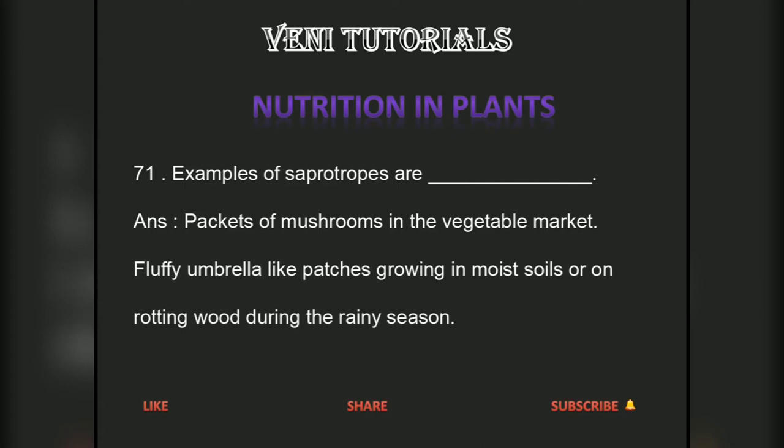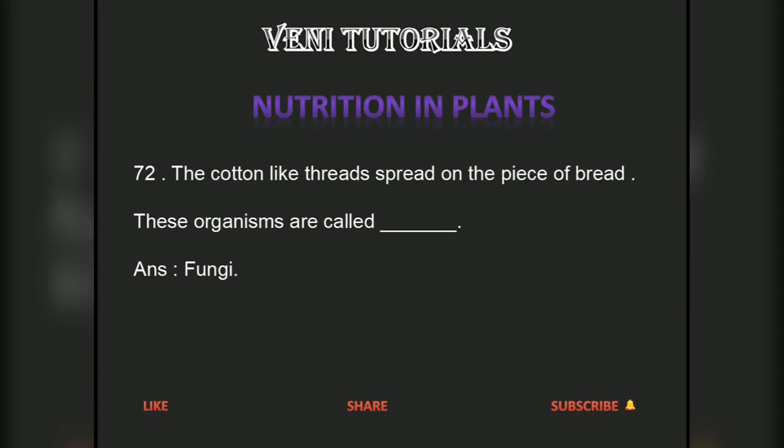Examples of saprotrophs are mushrooms. Fluffy umbrella-like saprotrophs are patches growing in moist soils or on rotting wood during the rainy season. The cotton-like threads spread on a piece of bread — these organisms are called fungi.